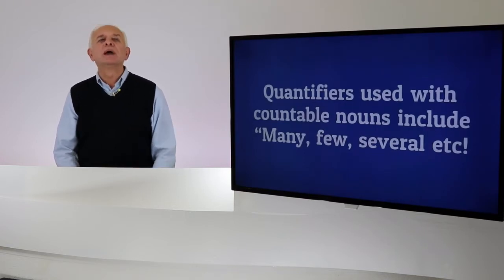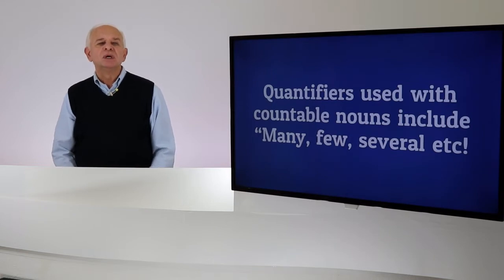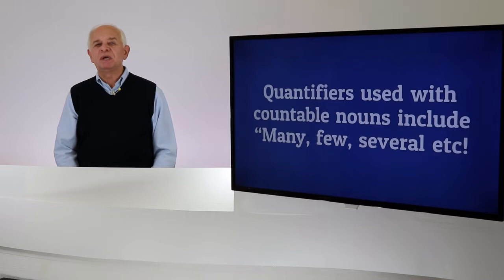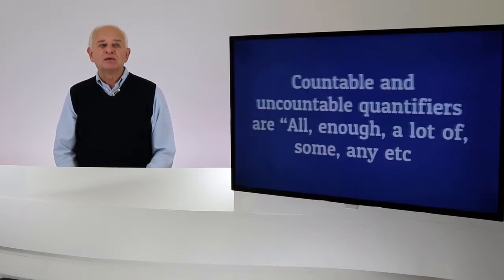Quantifiers used with countable nouns include many, few, and several. So we have many of those. There are many people here. We have a few onions, a few potatoes, a few apples, something like that. We can count those things. Again, those are all called quantifiers.